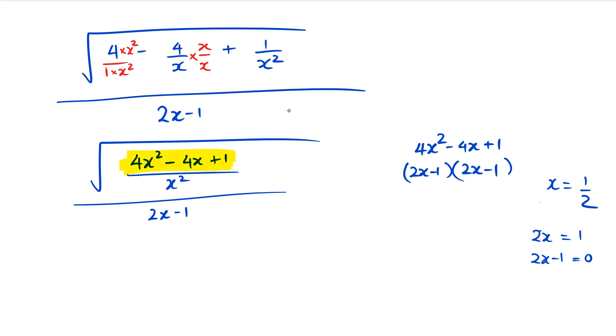What we're going to do is replace this 4x² - 4x + 1 with (2x - 1)². So this square root is now going to look like (2x - 1)² divided by x².